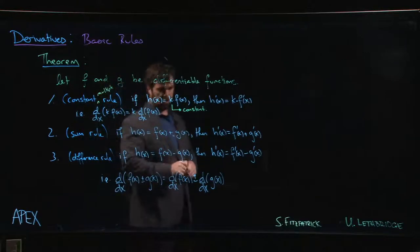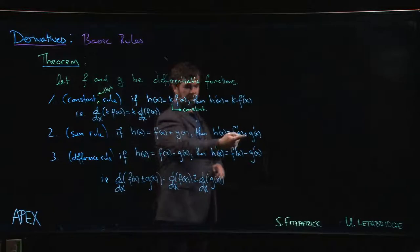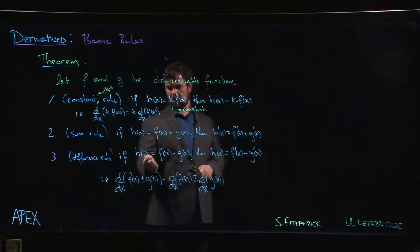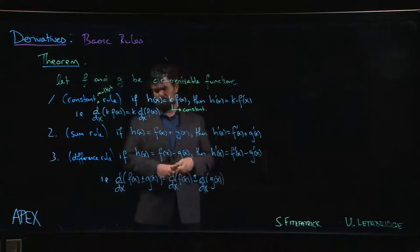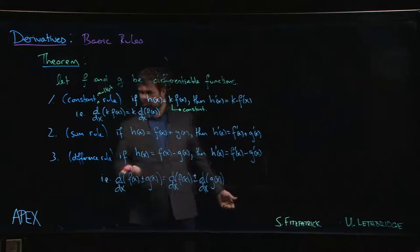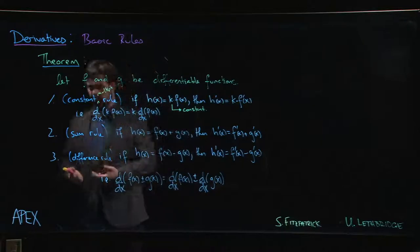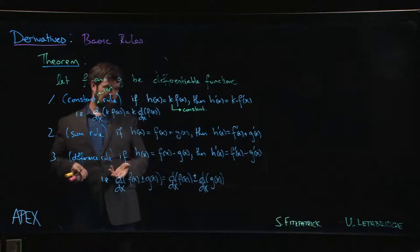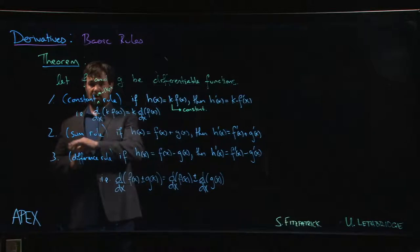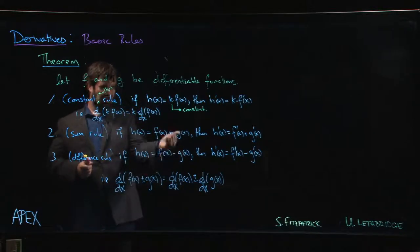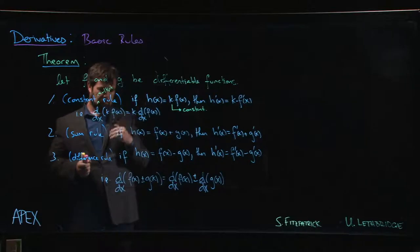The sum rule says that the derivative of a sum is the sum of the derivatives. Similarly, the derivative of a difference f minus g is the difference of the derivatives. The difference rule is usually just lumped together with the sum rule - they're really the same thing. In fact, we can think of minus g as plus minus 1 times g. If you have the constant multiple rule and put k equal to minus 1, you can get the difference rule from the sum rule. So really, it's the constant multiple rule and the sum rule that are the important ones.